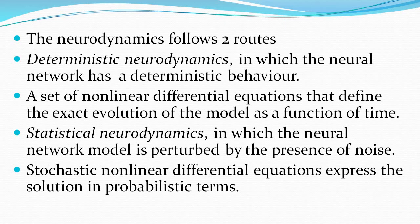Neurodynamics follows two routes: deterministic neurodynamics and statistical neurodynamics. In deterministic neurodynamics, neural networks exhibit deterministic behavior, described by a set of non-linear differential equations as a function of time.